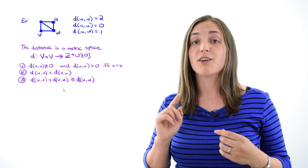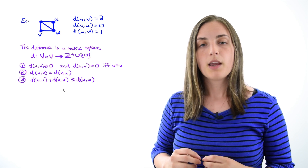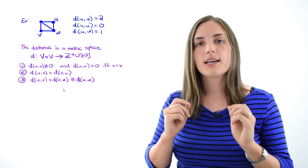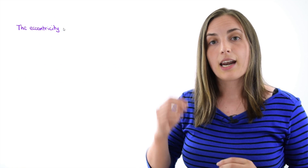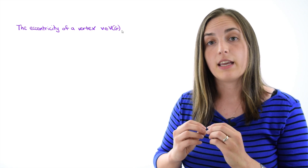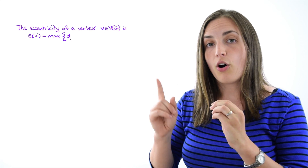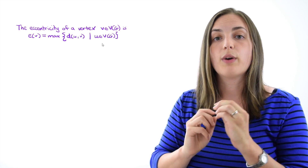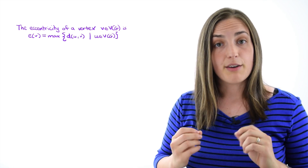Now that we've reviewed the idea of distance, we're ready to define eccentricity. Remember, distance was defined for a pair of vertices, whereas eccentricity is defined on a single vertex. We define the eccentricity at a particular vertex v to be the maximum of all the distances from v to any other vertex u in the graph.